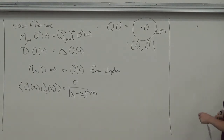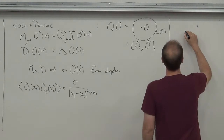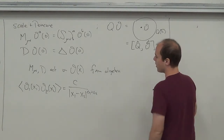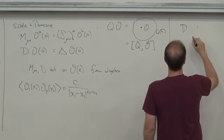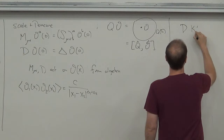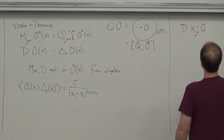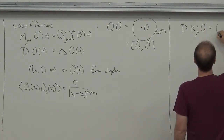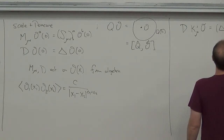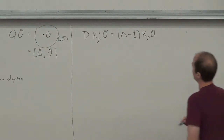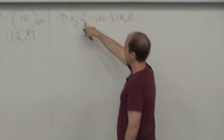Let's talk about K_mu. The first observation is that K_mu is a lowering operator for dimension. If we ask about the dimension of K_mu acting on an operator, using the conformal algebra you can show that this is just the dimension of O minus 1 times K_mu O. So whatever eigenvalue O had, K_mu O has a lower eigenvalue.